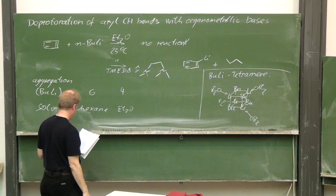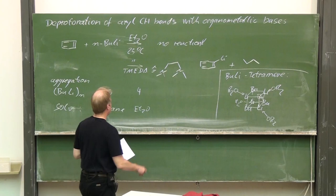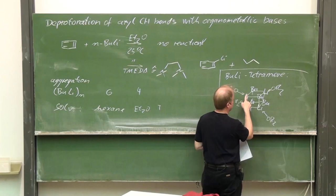In addition, the lithium is coordinated by the oxygen of the ether molecules. This is the structure of the tetramer. You can see these four lithiums forming the corners of a tetrahedron.